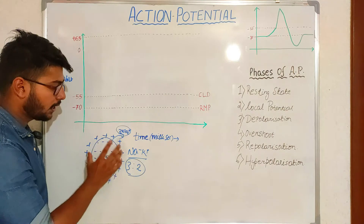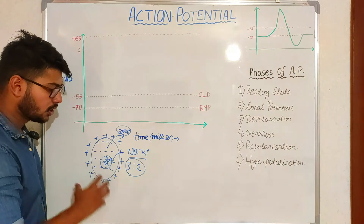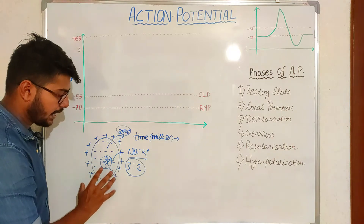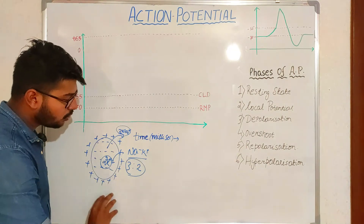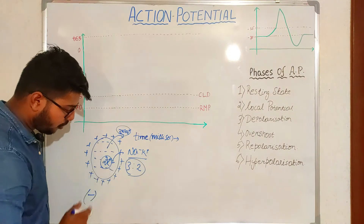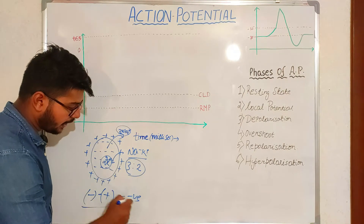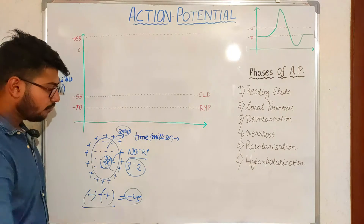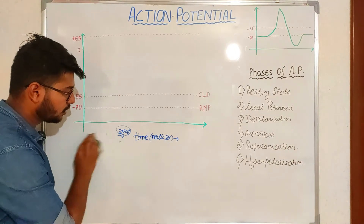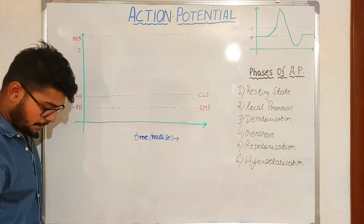This helps in changing the potential of the neuron. Outside, there will be more positive charge accumulation, and inside there will be less positive charge accumulation. This is why the membrane potential is negative inside. The net membrane potential equals inside minus outside, so the resultant is negative. In the resting membrane potential condition, the value of the neuron is minus 70 millivolts.